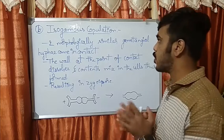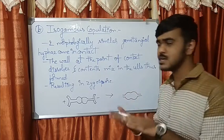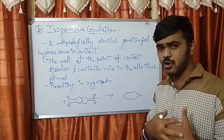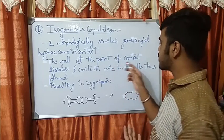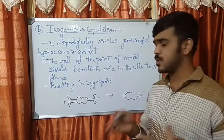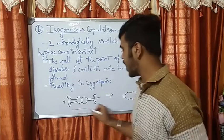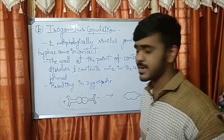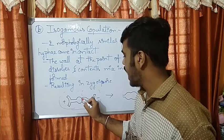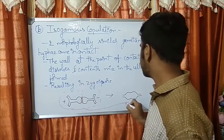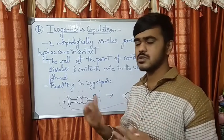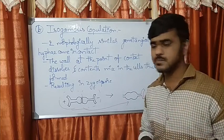The next type of gametangial copulation is isogamous copulation, where morphologically similar gametangial hyphae come in contact. The entire gametangium, part of the gametangial hyphae, comes in contact and fuses. The wall at the point of contact dissolves, the contents mix, and this results in zygospore formation. This isogamous gametangial copulation usually results in a zygospore.